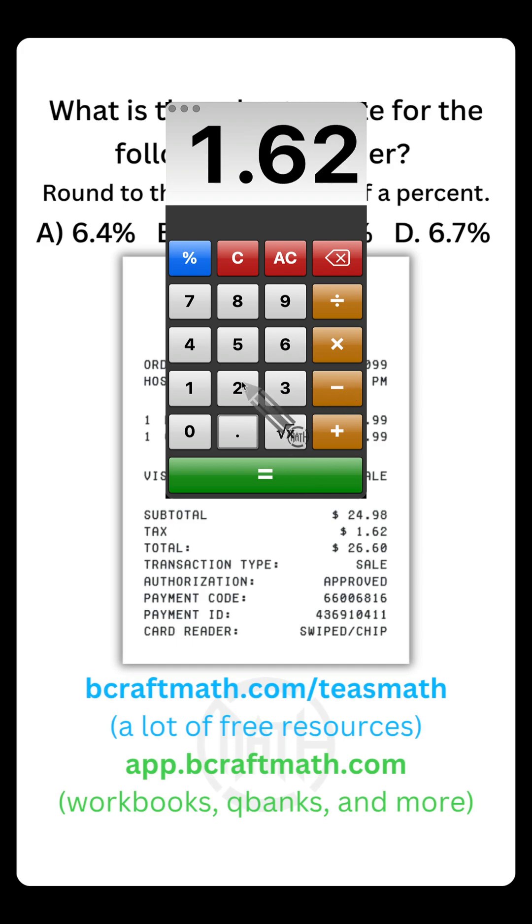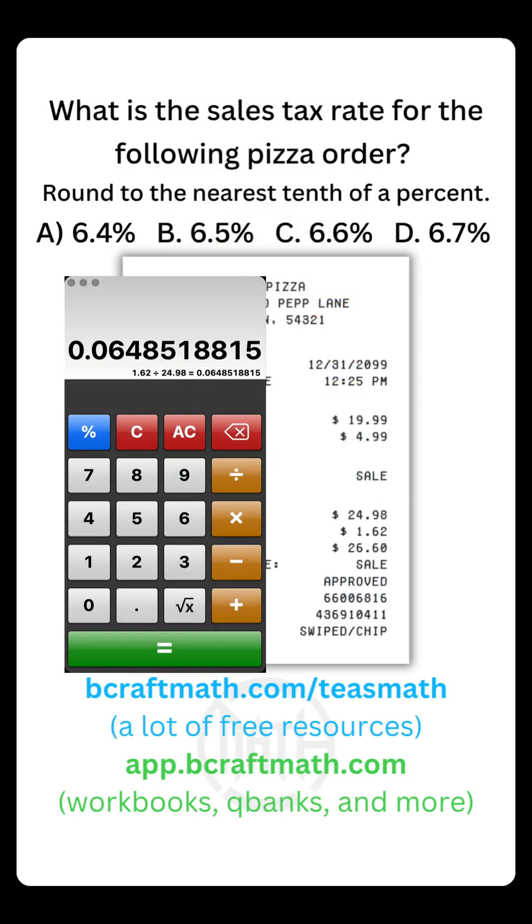So again, let's take that sales tax we're going to pay, $1.62, divide that by the subtotal, which is $24.98. And what we're going to get here is the decimal representation. Now I know it says to round to the nearest tenth, but we need the nearest tenth of a percent.